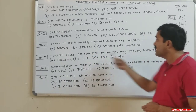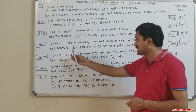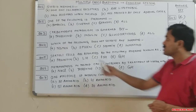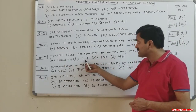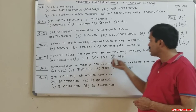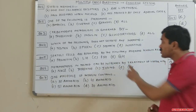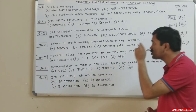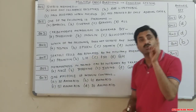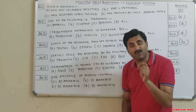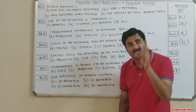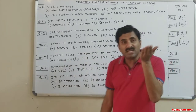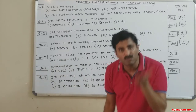Question five: Sertoli cells are regulated by which pituitary hormone? The options are prolactin, LH, FSH, and GH — all pituitary hormones. We must identify which one specifically regulates Sertoli cells. Sertoli cells are found inside the seminiferous tubules of the testes.